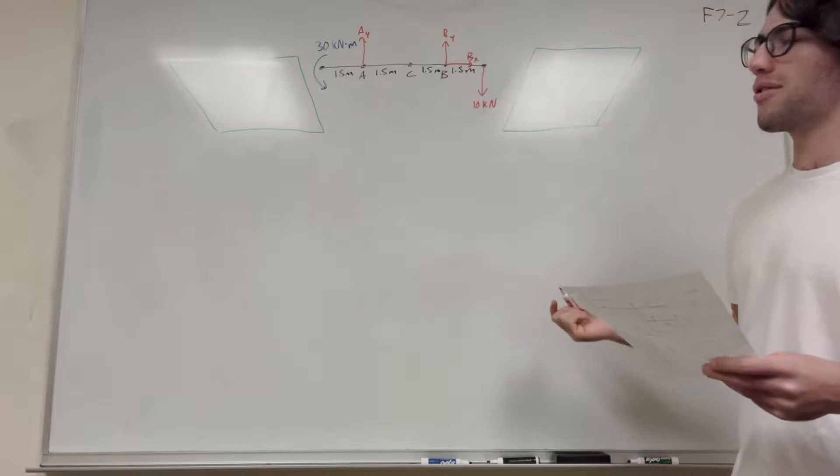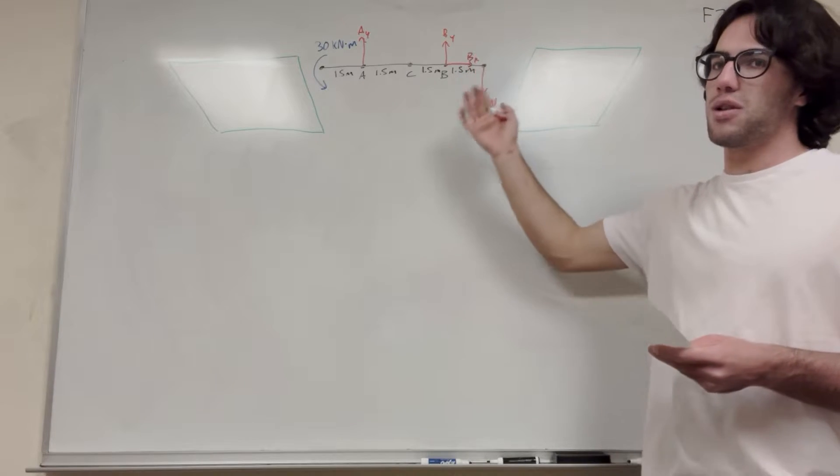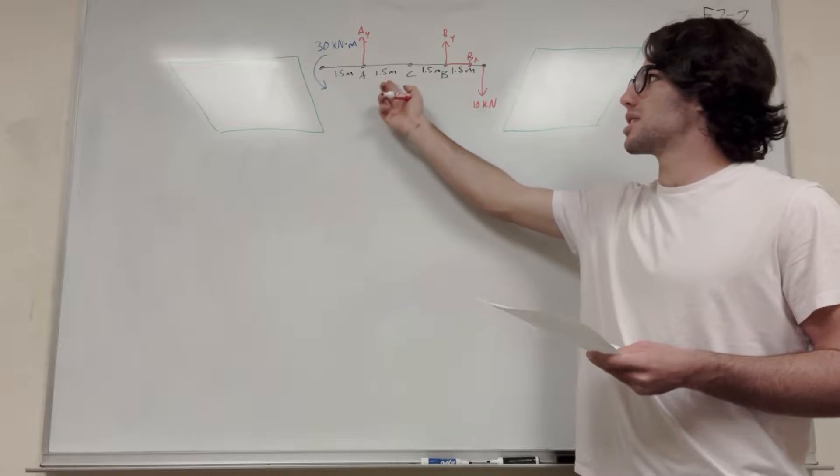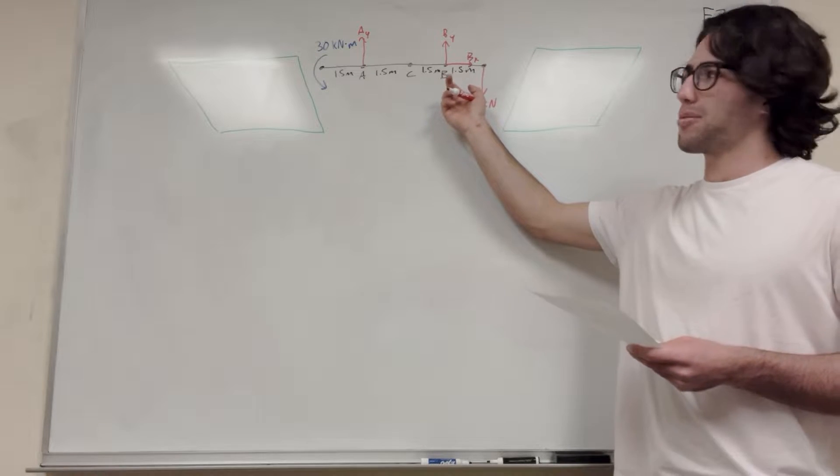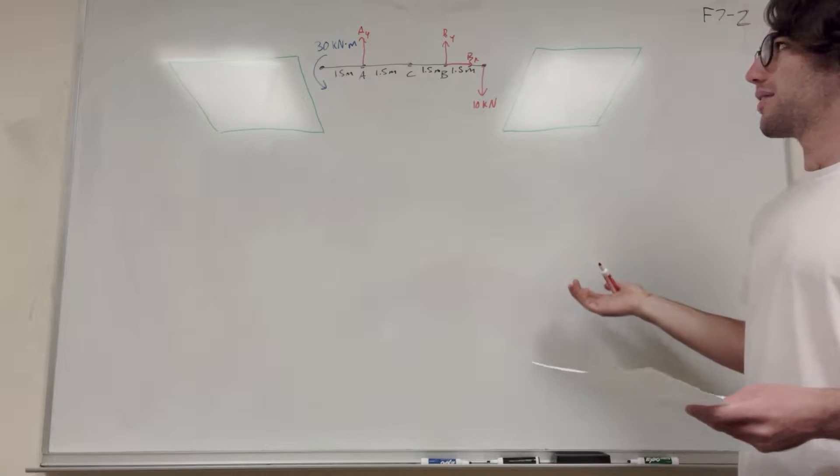Well, what we can say here, we can do sum of the forces in the X direction. I'm not going to write it out. But we're going to find that B_X equals zero, because if you were to take sum of the forces in the X direction, we're at equilibrium, and B_X is the only thing acting in the X direction, so it has to be zero.